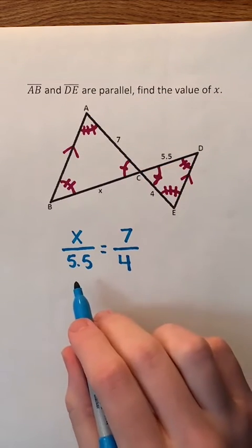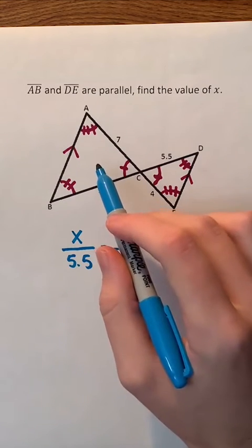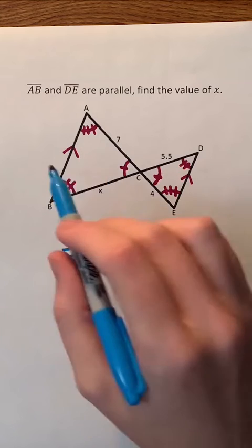We can set these fractions equal to each other because these two triangles are similar since their corresponding angles are congruent so their sides must be proportional.